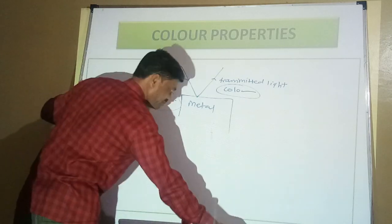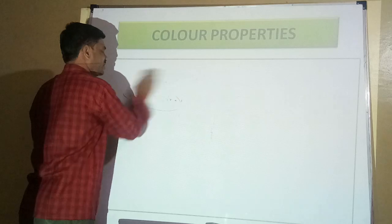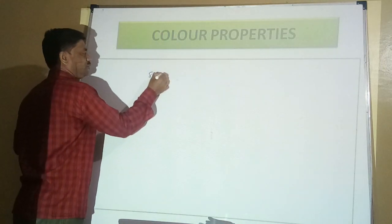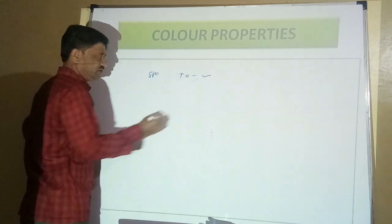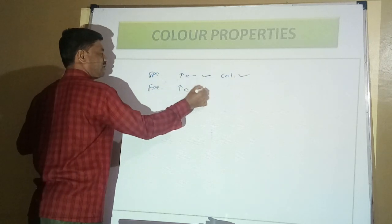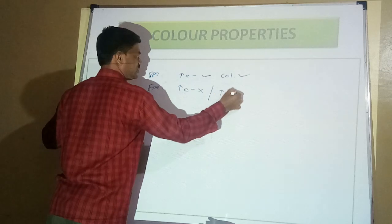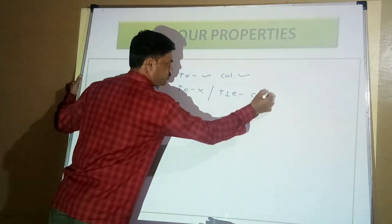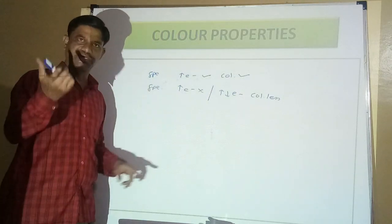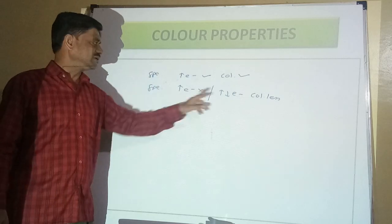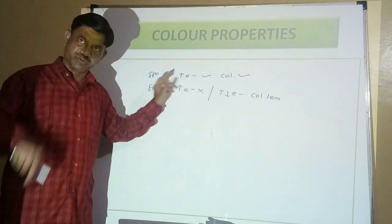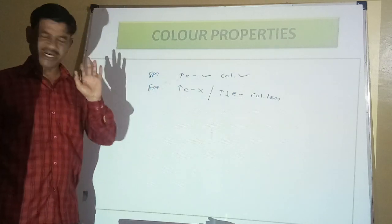For MCQ purposes, remember this very important point: those species which have at least one unpaired electron are found to be coloured. While those species which do not have an unpaired electron, or all electrons are in paired condition, are found to be colourless. If a species is coloured, it must possess at least one unpaired electron.